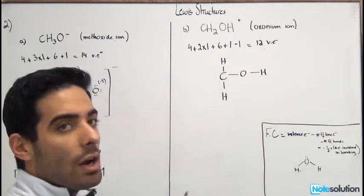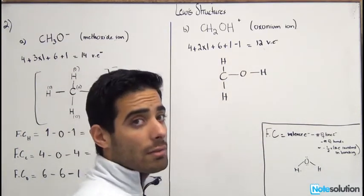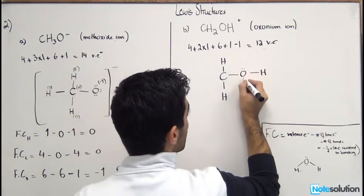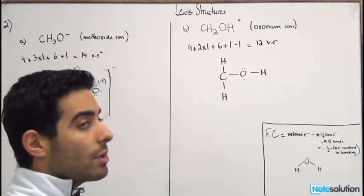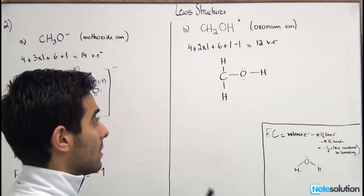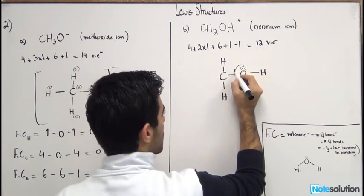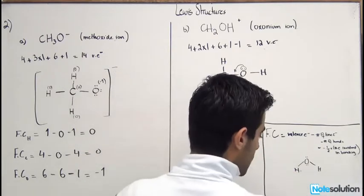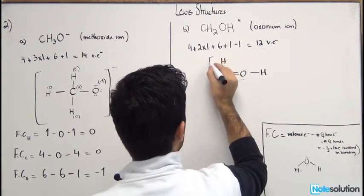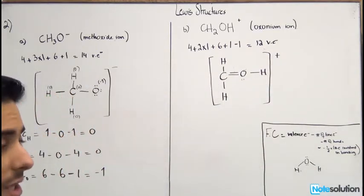After drawing the structure and connecting the atoms with bonds, we've used eight electrons out of twelve, leaving four. We fill terminal atoms first — the H's are already satisfied. Oxygen needs four more electrons, so we place them as two lone pairs. However, carbon only has six electrons, so we use one of oxygen's lone pairs to form a double bond, giving carbon eight electrons. Place the positive charge on the bracket.